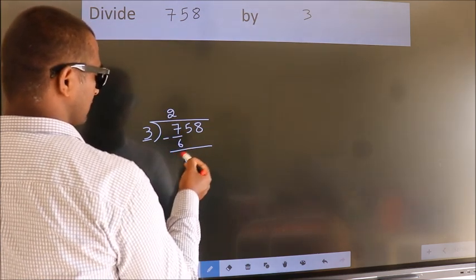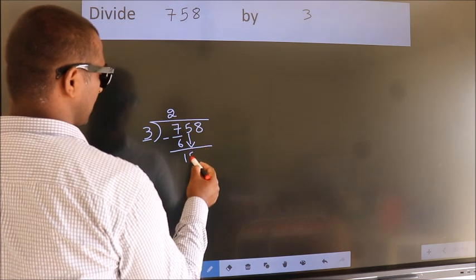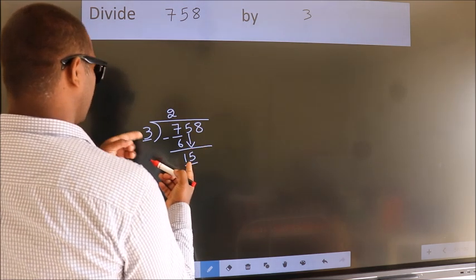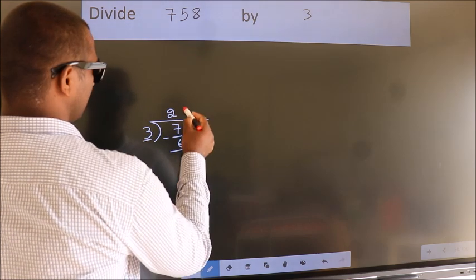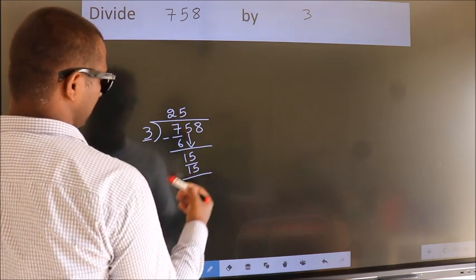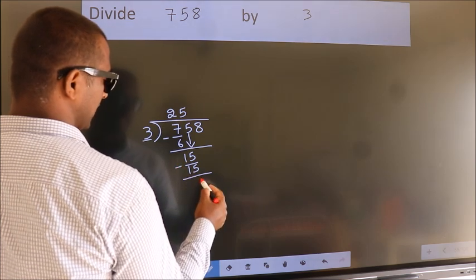After this, bring down the beside number. So 5 down, so 15. When do we get 15 in the 3 table? 3 times 5 equals 15. Now we subtract. We get 0.